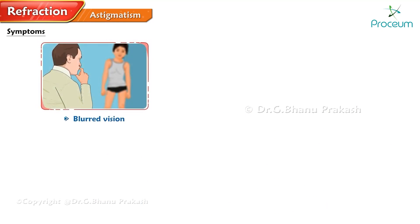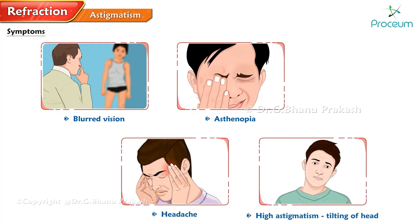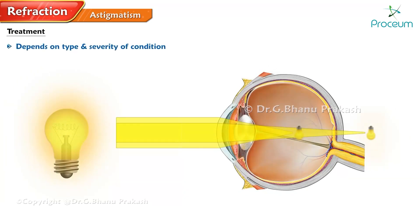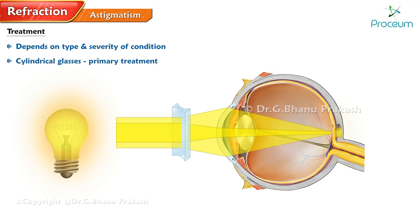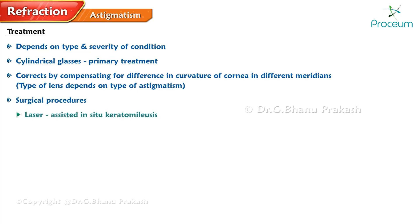Astigmatism presents with distorted blurred vision, asthenopia, and headaches. In high astigmatism, the patient can even show tilting of the head. The treatment depends on the type and severity of the condition. Cylindrical glasses are the primary treatment, correcting astigmatism by compensating for the difference in curvature of the cornea in different meridians. In some cases, surgical procedures like astigmatic laser-assisted in situ keratomileusis, limbal relaxing incisions, and the Ruiz procedure can also be used.